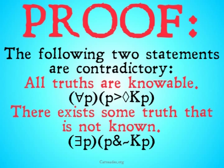The following statements are contradictory — that's what the proof is trying to show. It's trying to show that the statement 'all truths are knowable' — for all propositions P, P being true implies that it's possible that we know that P — and 'there exists some truth such that it is not known' — there exists some P such that P is true and it's not the case that it's known that P — those two statements are contradictory.